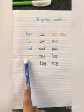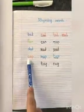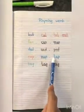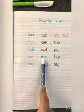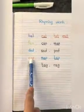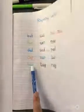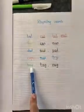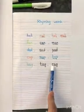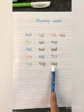Next, cap — what are the rhyming words of cap? Map and tap. Map and tap are the rhyming words of cap. Next, bag — what are the rhyming words of bag? Tag and rag. Bag, tag, and rag.